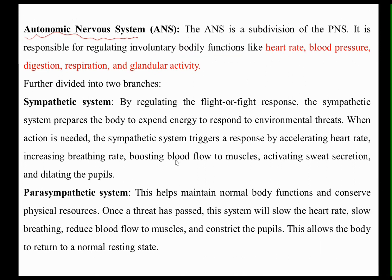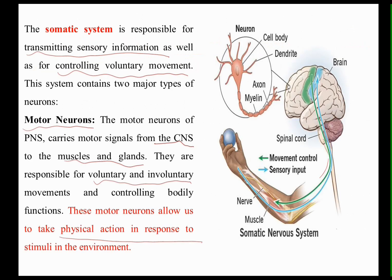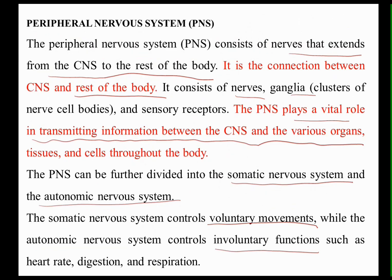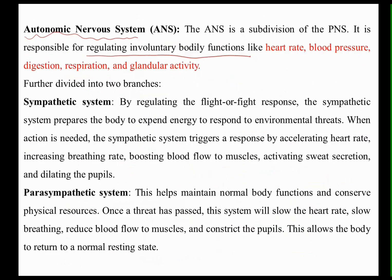The second type of peripheral nervous system is the autonomic nervous system, which is a subdivision of the peripheral nervous system. It is responsible for regulating involuntary bodily functions. Almost all involuntary bodily functions are managed by the autonomic nervous system, whereas the somatic nervous system carries voluntary movements. The autonomic nervous system controls involuntary functions like heart rate, blood pressure, and respiration.